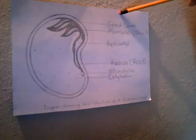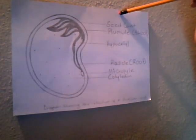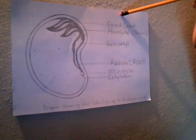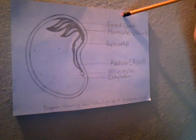Types of seeds. Here we have a dicotyledon seed, which is a green seed, and we will go through the structure and function of each part.